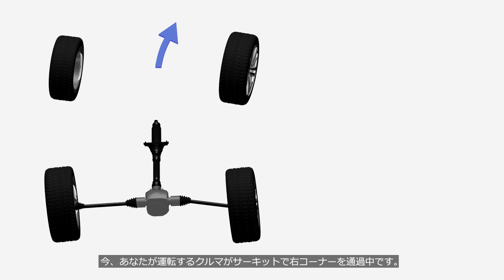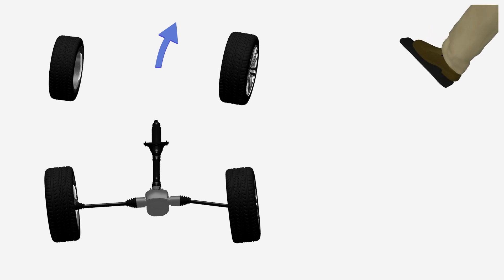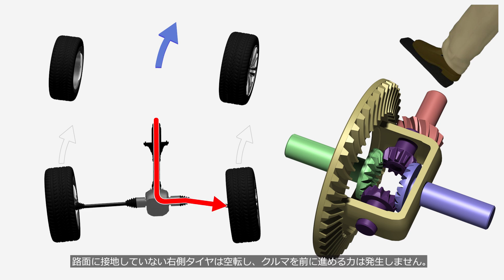Your car is going through a right-hand corner on a racetrack. The left suspension is fully bottomed out, and the right tire is almost lifting off the ground. What would happen if you press down on the accelerator pedal at this moment? In a car with a conventional differential, all of the engine power is transmitted to the right-side tire. Because the right-side tire is not in contact with the road surface, it spins freely and does not generate any forward force for the car.